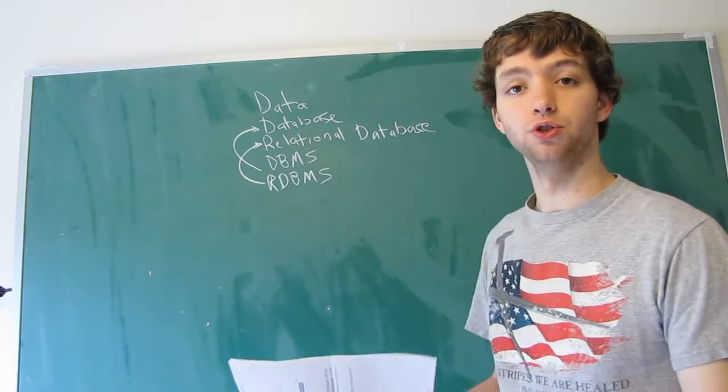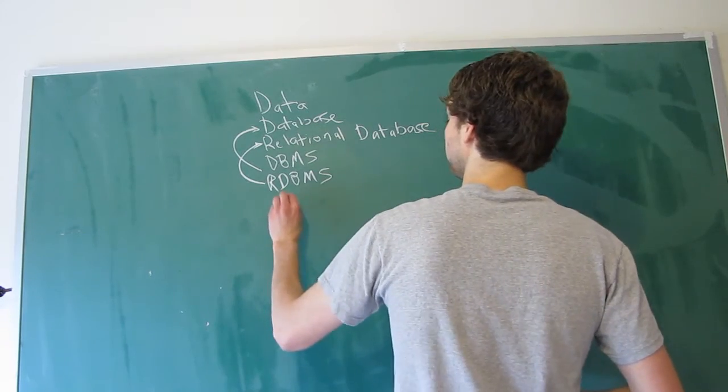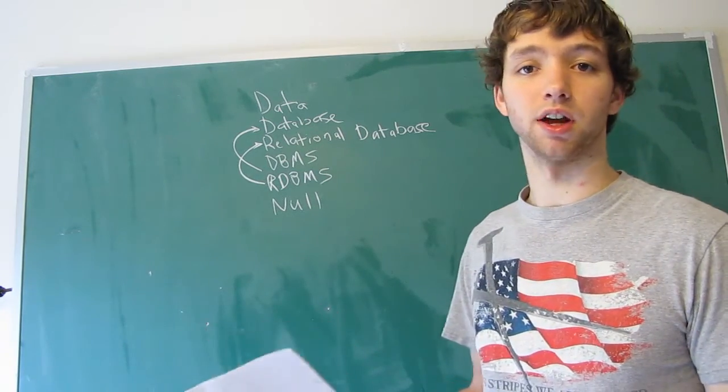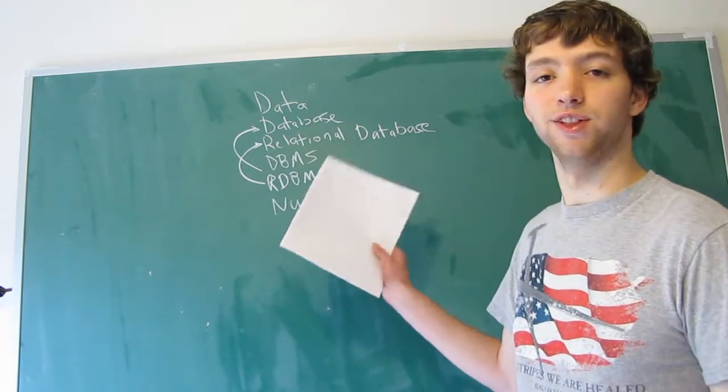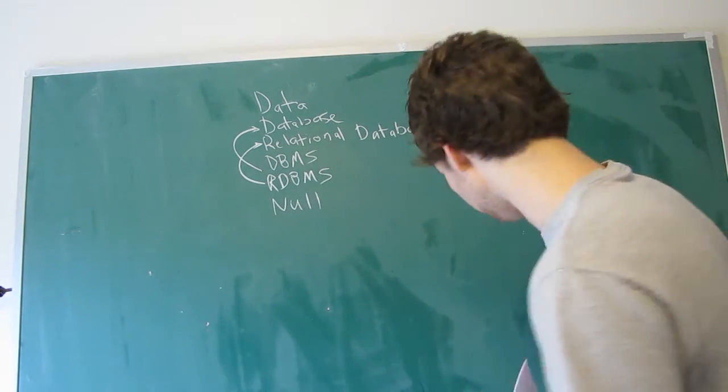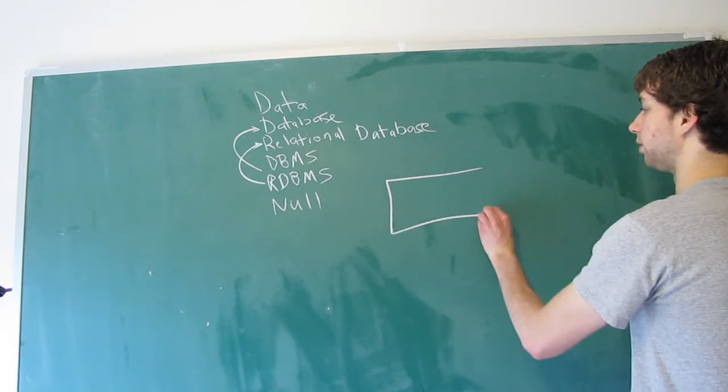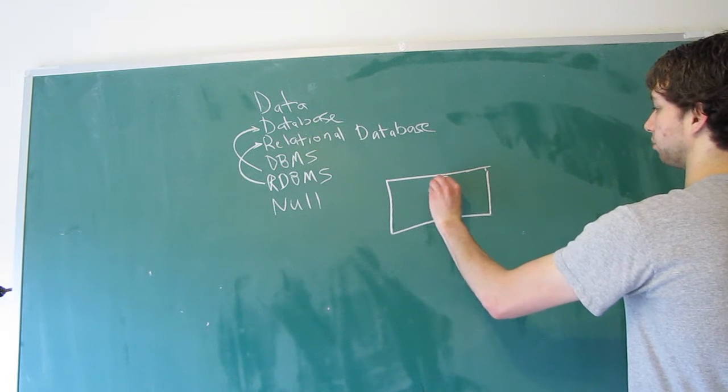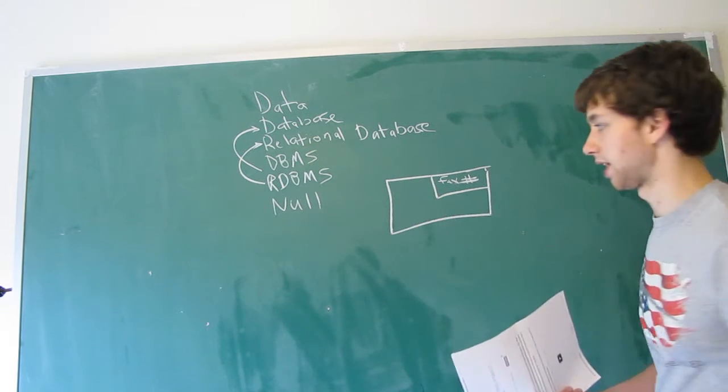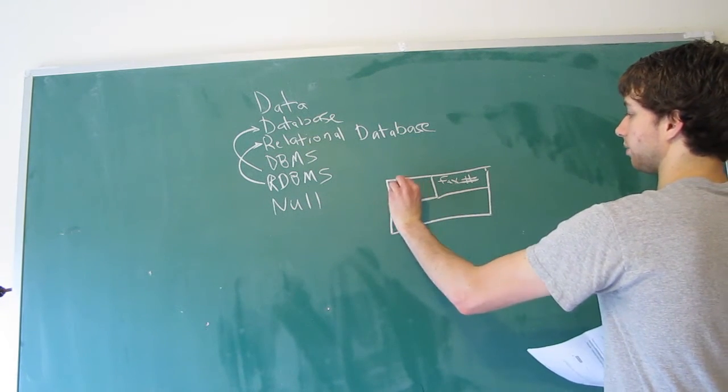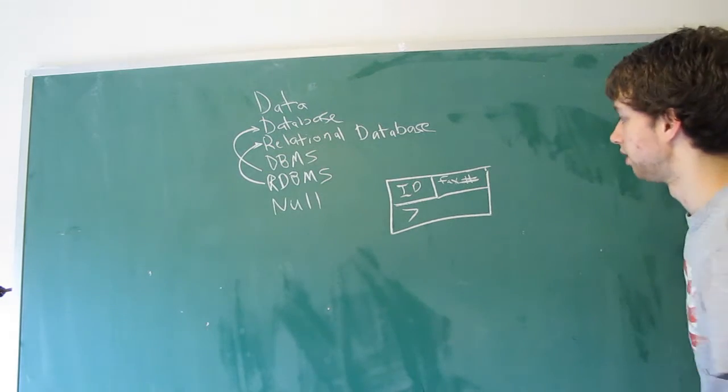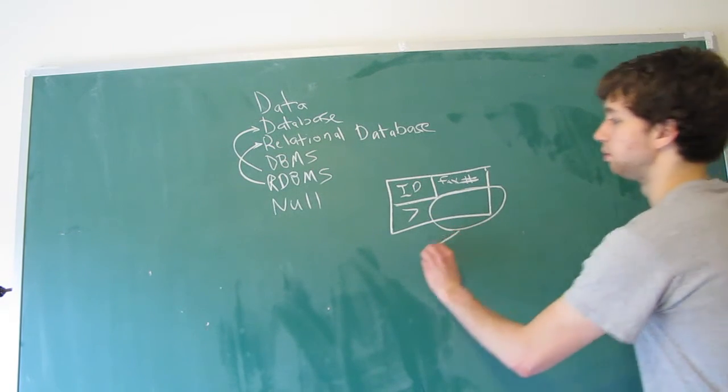Now we're going to introduce a new word to you, which is null, however you want to pronounce it. I've been told I pronounce it wrong, but I don't really care. This is when someone does not enter a value within a column on a table. So if we have a table, and we have something such as fax number. Well, not everyone is going to have a fax number. So when we have a guy with the ID of 7, and we don't have a fax number. This emptiness is said to be null.